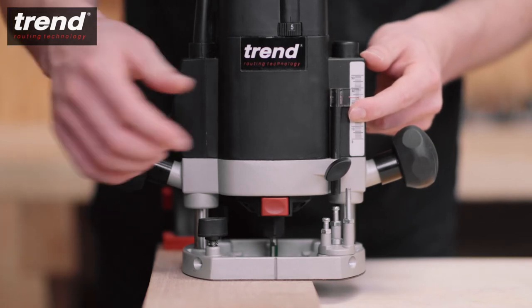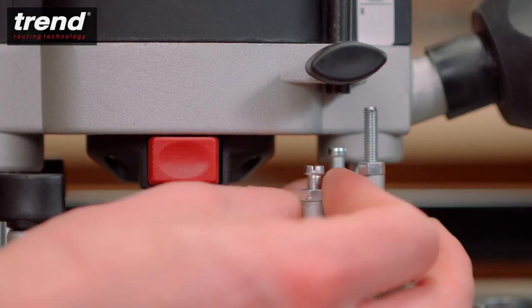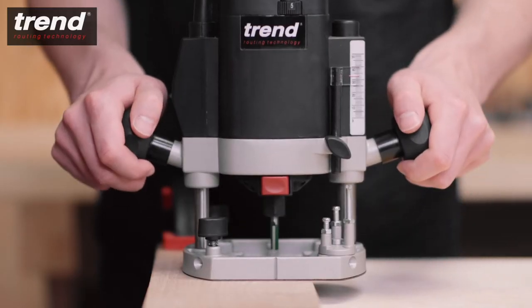Raise the depth stop to set the required cut depth. The depth stop can be used with the rotating turret to preset three different cut depths.